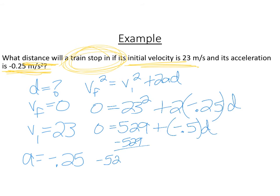Now divide by the negative 0.5. And you see your negatives will cancel. Your distance then is 1,058 meters.